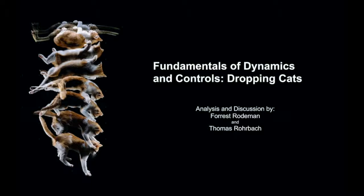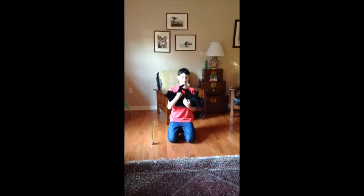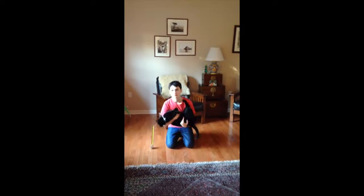In this video, we're going to be looking at the mechanisms which allow a cat to always land on its feet. Pictured here, we have Rice Rodman dropping Kuma from a height of one foot.